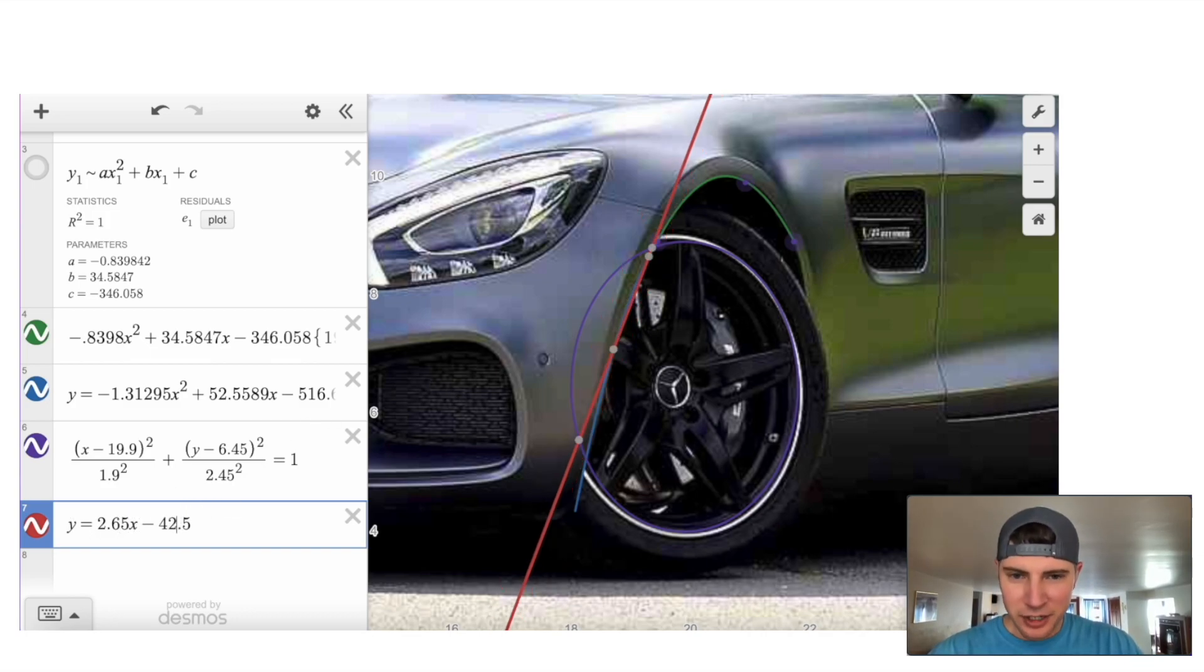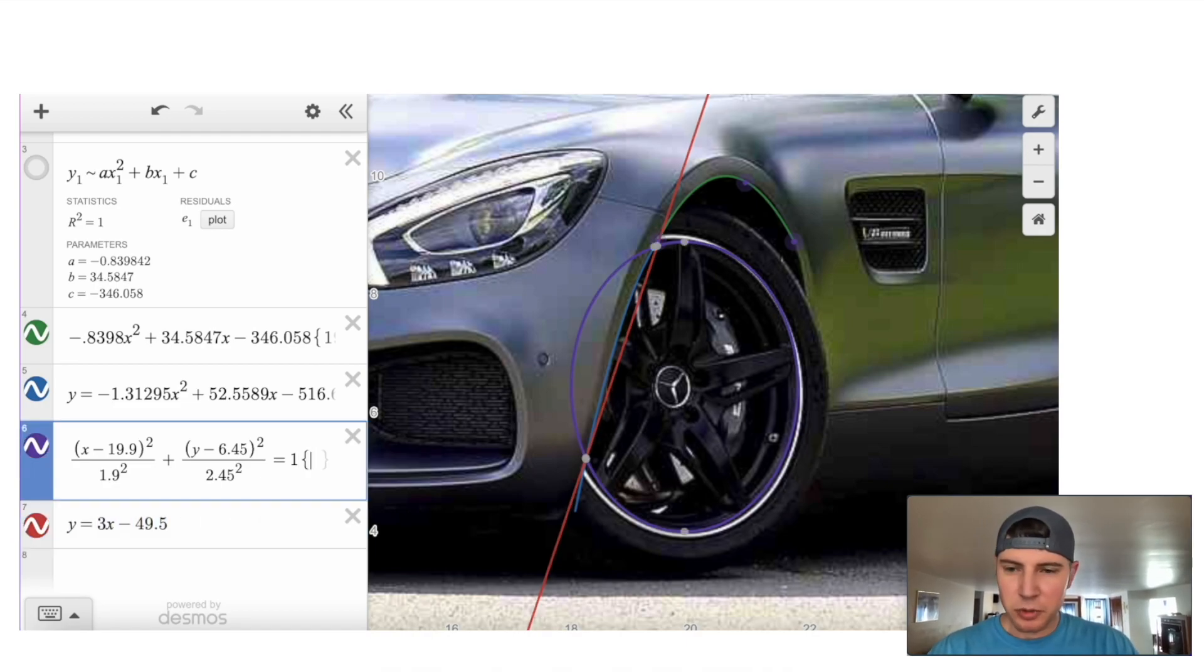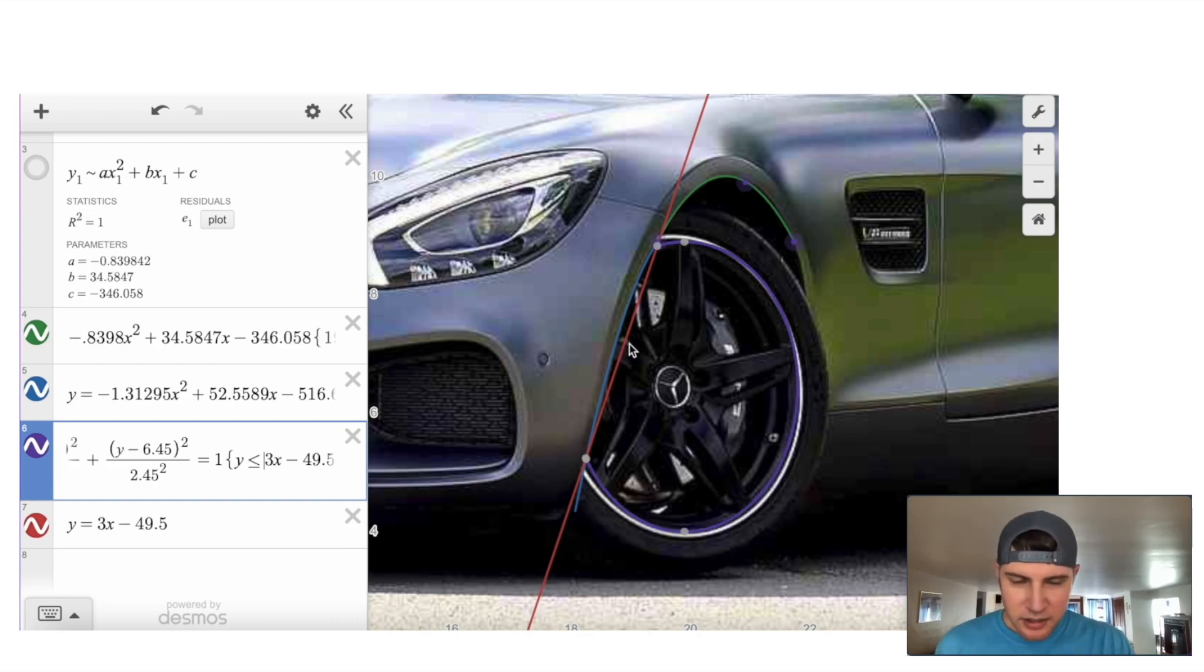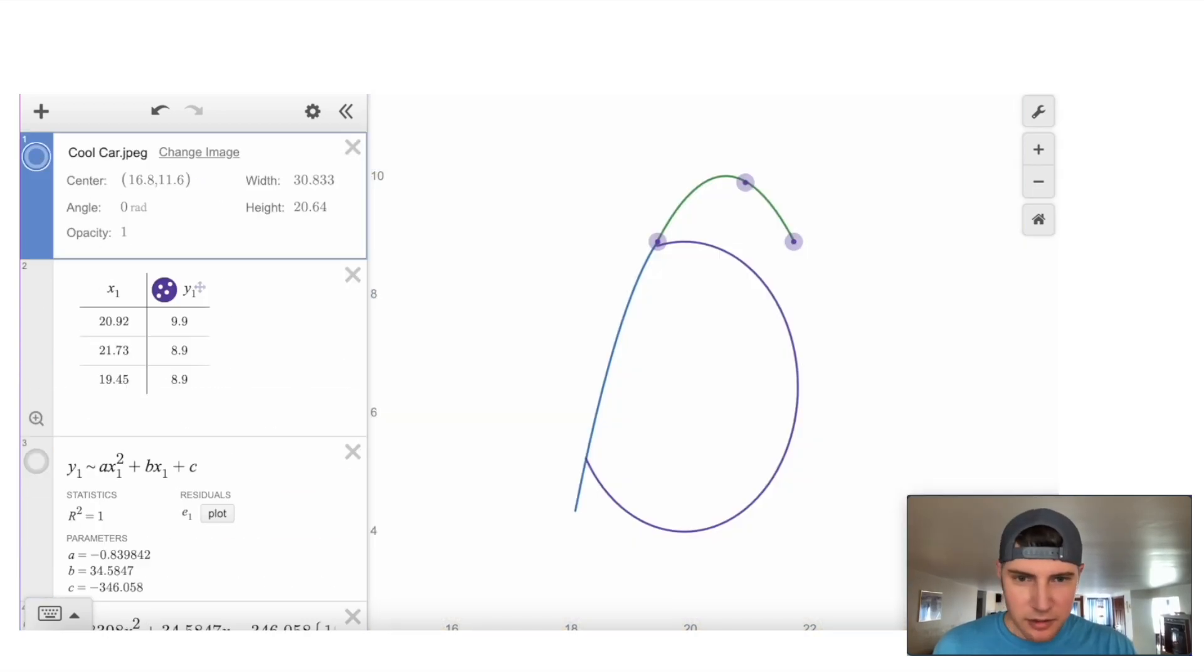I think we need to go a little bit steeper. There's definitely some fine tuning going on. I think even steeper. Maybe it's even a three slope. There we go. That looks pretty good. So then this is going to be our restriction. So we'll put a squiggly bracket, put that in there, and make this less than or equal to. And now you can see we cut off that purple wheel right there. And now we can turn this red line off. And let's check it, see how it looks. This looks pretty good.